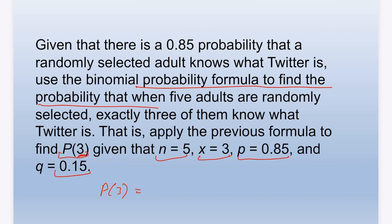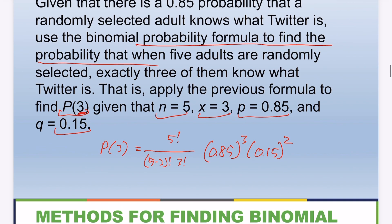P(3) equals 5 factorial over (5 minus 3) factorial times 3 factorial — that is n factorial over (n minus x) factorial times x factorial — multiplied by 0.85 raised to the x power, which is 3, times 0.15 to the second power, which is n minus x.